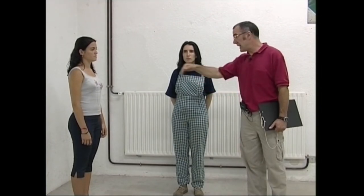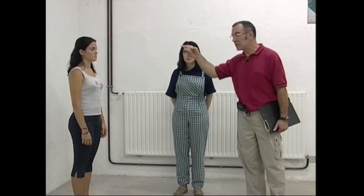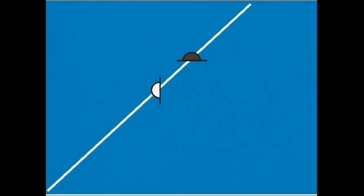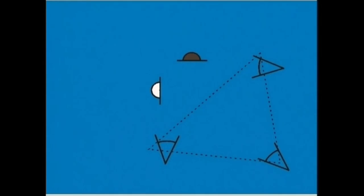Aktoren oinarrizko pozizioak aztertu ditugunean, esan dugu parez pare ala larogeita hamar graduko angelua osatuz egon zitezkeela. Azken kasu honetan, hau da, aktoreak ele bat osatzen dutenean, ardatzak euren buruak zeharkatzen ditu. Kasu honetan, triangelua era honetan osatuko genuke.